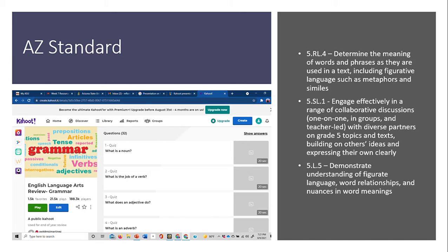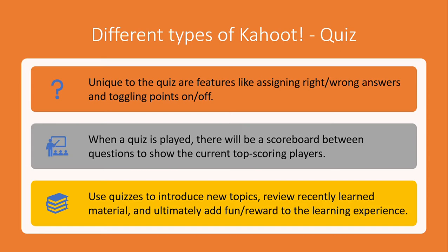When I used this with my students during the first week of school as a getting-to-know activity, I was able to cover three Arizona State standards in ELA. We did ours on English language arts grammar review with 32 questions — just to see where they were at and get an idea of how much they retained from last school year and what I need to reteach. Kahoot is an amazing way to use as both an informal and formal assessment tool.